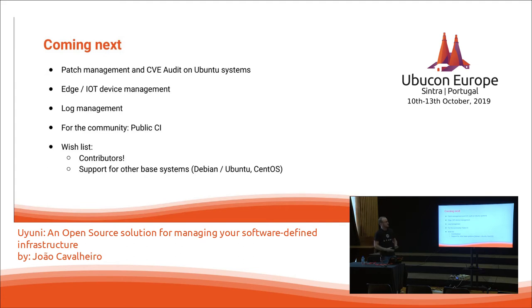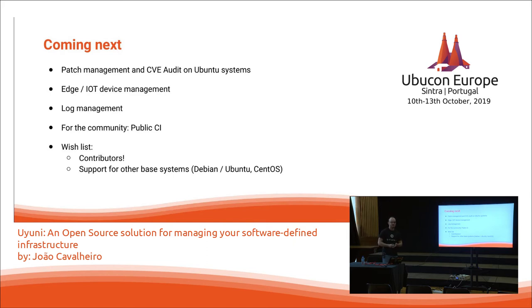Things we are working on: patch management and CVE audit on Ubuntu systems, management of IoT devices, and log management — we are evaluating both Grafana Loki and the ELK stack for integration. We will have a public CI soon so the community can have a complete development environment. In terms of wishlist, we need contributors and we are looking for support on other base systems. Currently Uyuni runs on openSUSE only, although it can manage almost any kind of system.